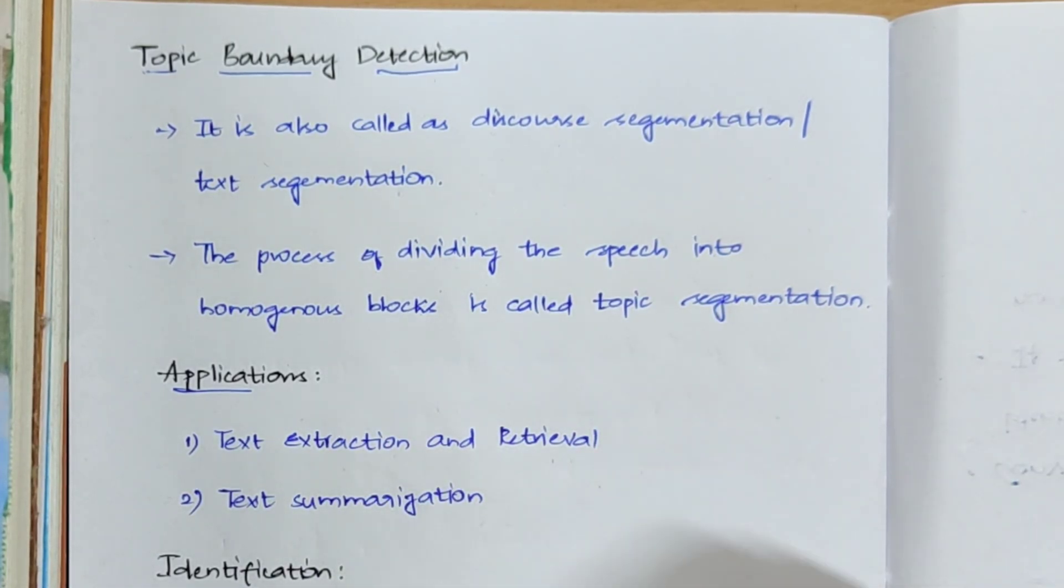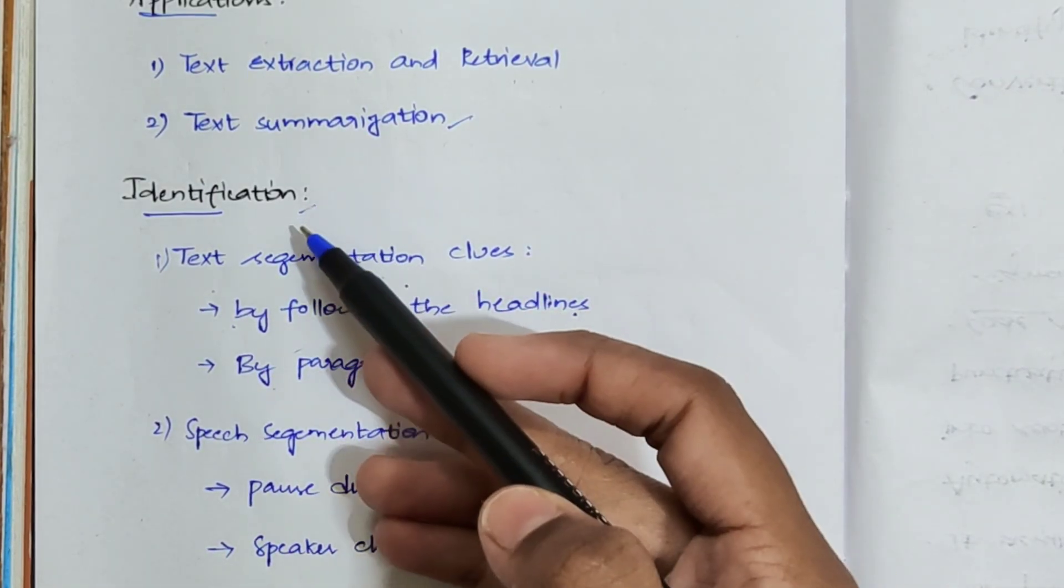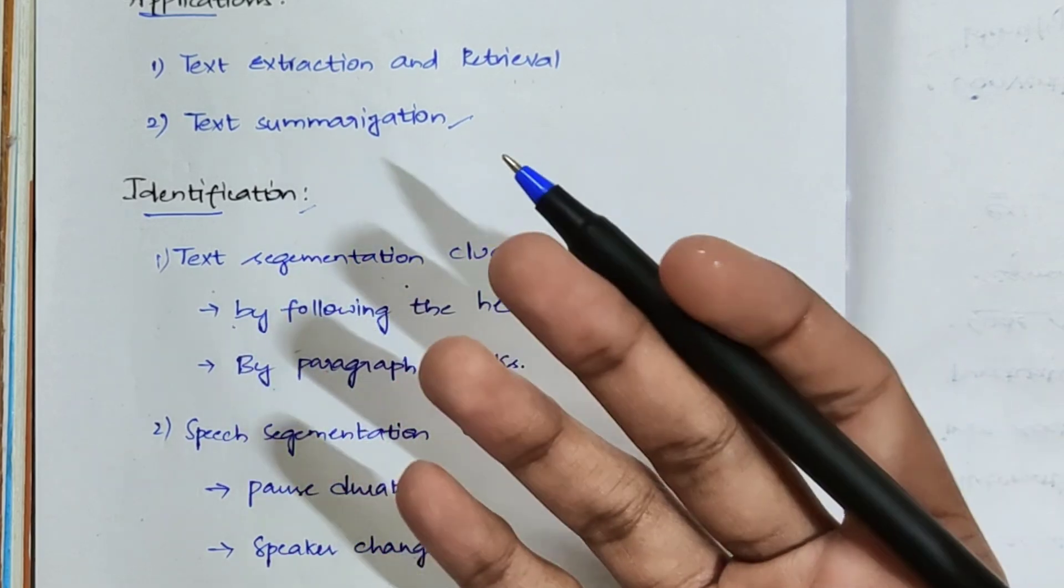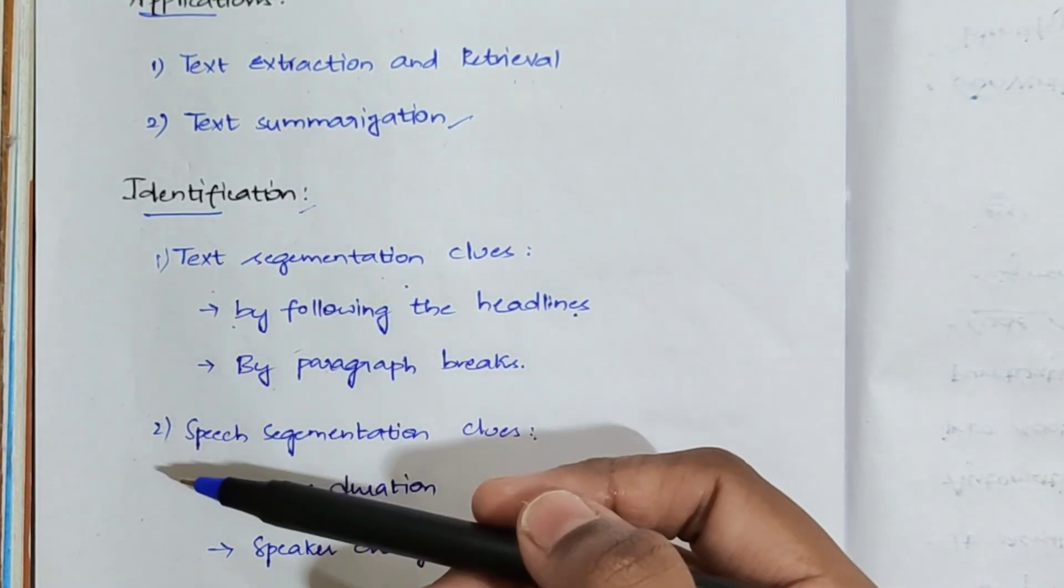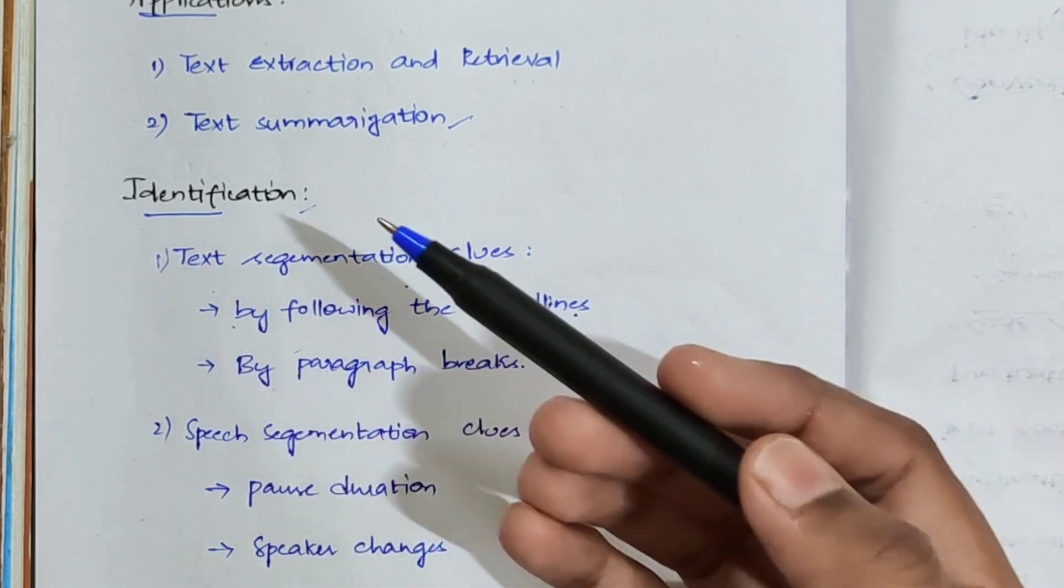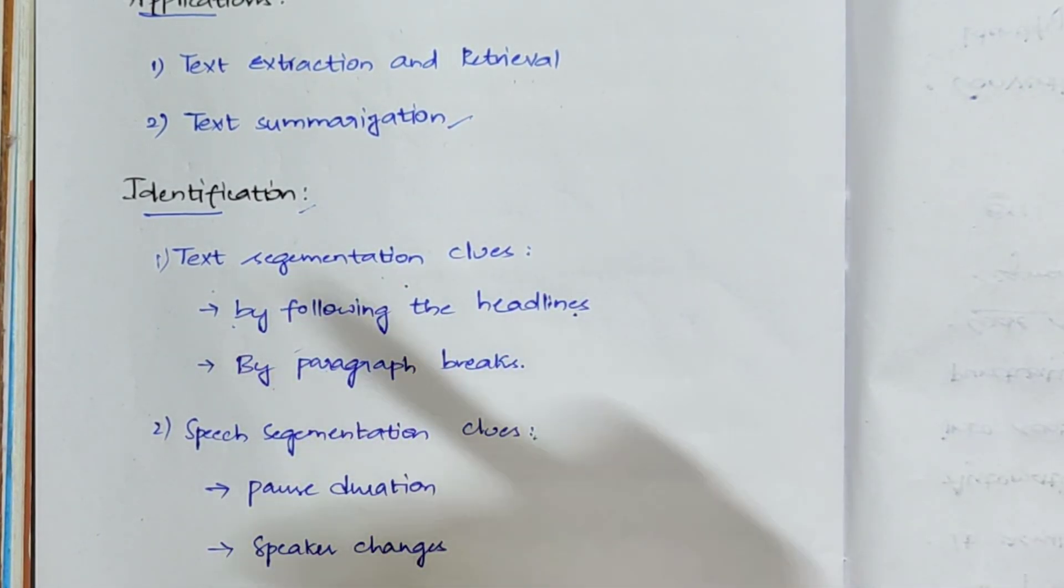Coming to identification - what is this identification? Identification is nothing but you have to find the topic boundary. The topic boundary can be detected in two ways: first, when you pass an input text, the system has to find the topic boundary, and second, whenever you give some speech or audio to the system, it has to detect the topic boundary.